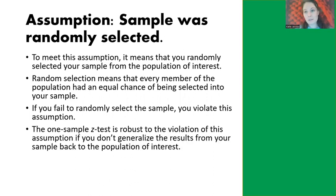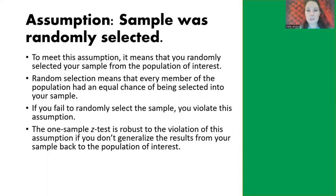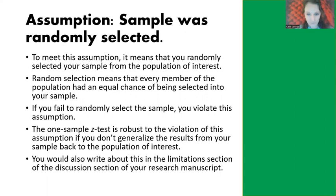However, the one-sample z-test is robust to the violation of this assumption. We just don't try to generalize our results from our sample back to the population of interest. So here, comparing our sample of NBA players to the entire population of biological males, we can't actually generalize this to all NBA players — we can only talk about the Milwaukee Bucks. We'd also write this in the limitations section of the discussion section of the research manuscript.